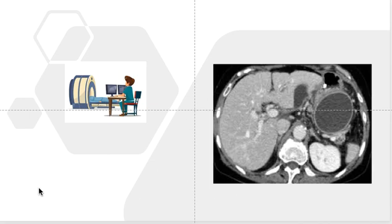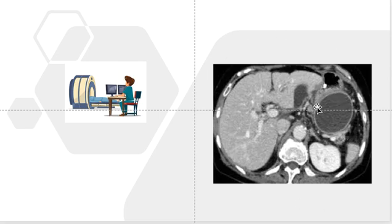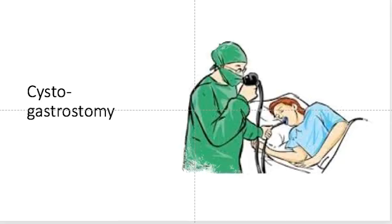With minimal access surgery this can be done laparoscopically — you make the incision in the posterior wall of the stomach and suture it. The advantage of the laparoscopic technique is that you avoid a laparotomy, but you are still making a gastrotomy through the anterior wall of the stomach, which has to be opened and then sutured, causing some morbidity. The most recent advance is using the endoscope: making the incision endoscopically causes the least morbidity to the patient. We have this facility in our hospital, so we did the cystogastrostomy by endoscopy.